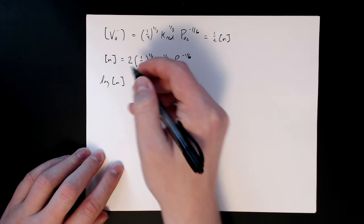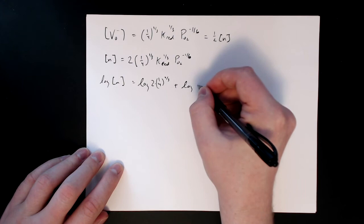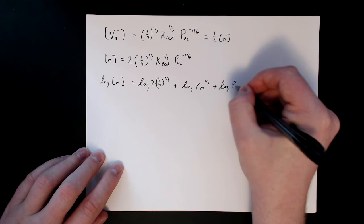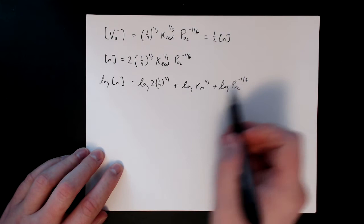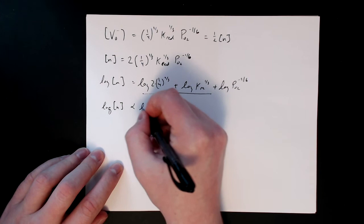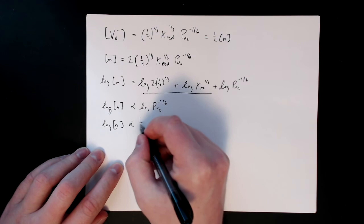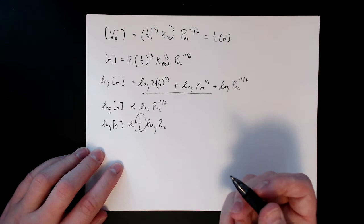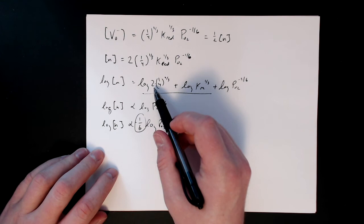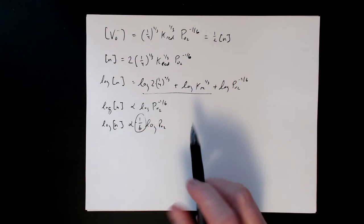Taking the log of both sides for the electron concentration: log(n) = log[2 · (1/4)^(1/3)] + log[K_red^(1/3)] + log[pO₂^(-1/6)]. The slope is still minus one-sixth — the same as for V_O². The only difference is in the constant term, which now includes an additional factor of log(2), shifting the curve slightly upward.